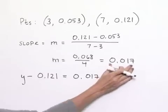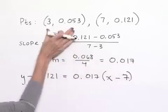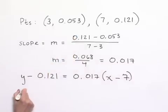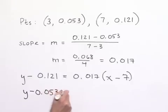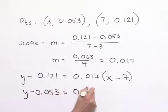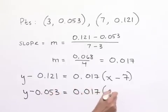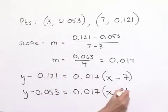We could also use our slope with our first point. That equation would read y minus 0.053 equals our slope times x minus the x-coordinate of the same point, which is 3.